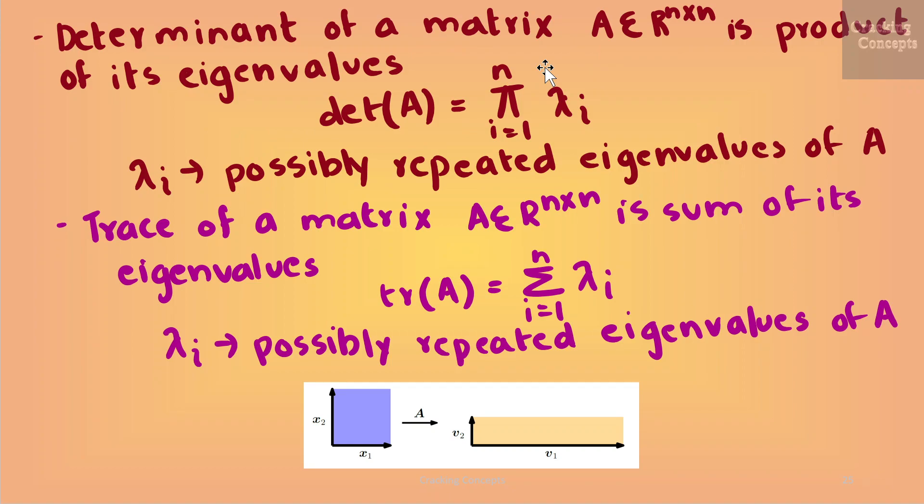The determinant of a matrix A is the product of its eigenvalues, that is det(A) = ∏_{i=1}^{n} λ_i, where λ_i are the possibly repeated eigenvalues of A.